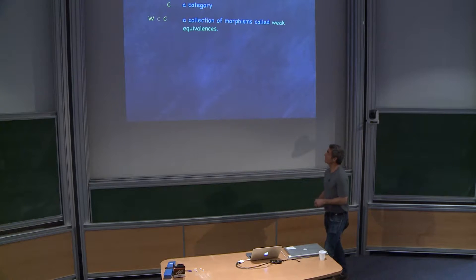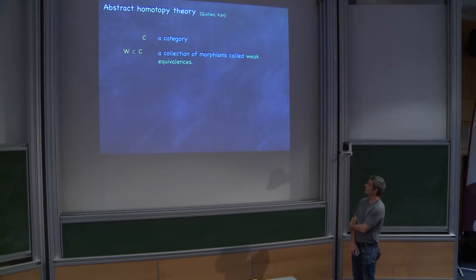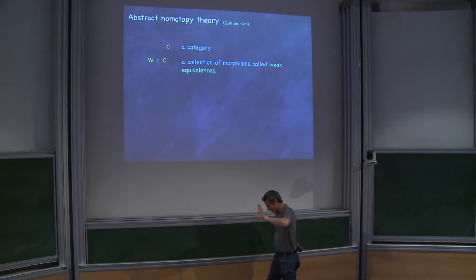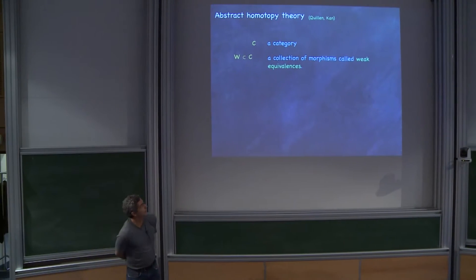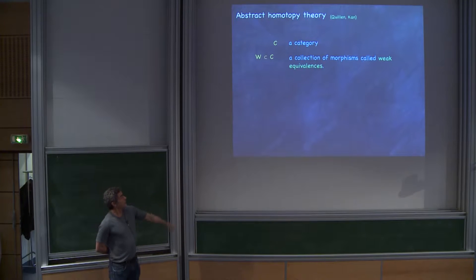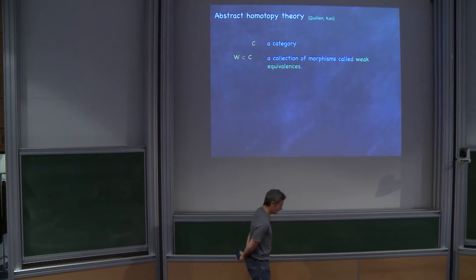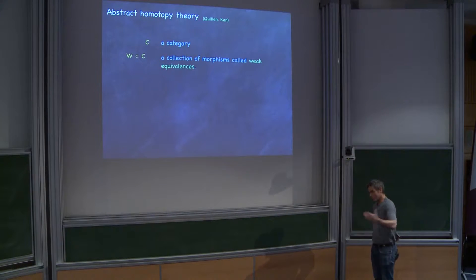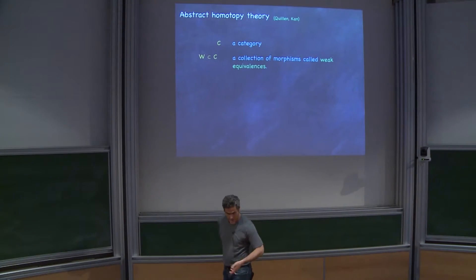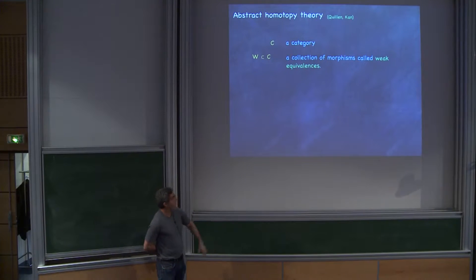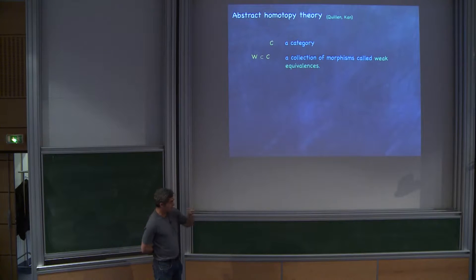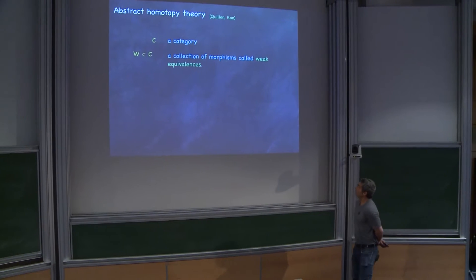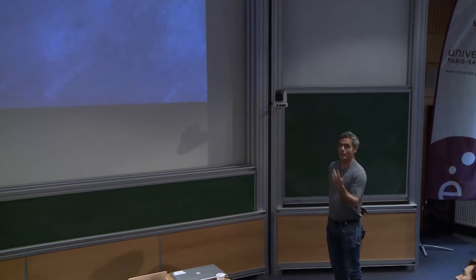In order to do that, we need an abstract framework for talking about homotopy theory. Abstract homotopy theory probably really starts with Grothendieck, but it starts to take on an apparatus of definitions in the work of Dan Quillen and Dan Kan. Quillen found himself doing homotopy theory in many different contexts — he wanted to prove that differential graded algebras modeled topological spaces up to rational equivalence, and differential graded Lie algebras and co-algebras, and he needed an abstract framework for making sense of that.